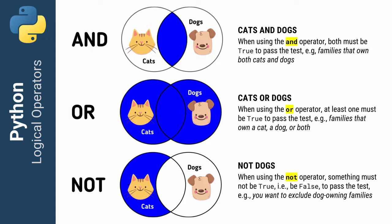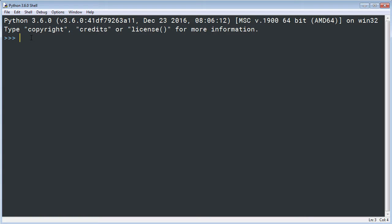The AND logical operator requires that both of the things being tested are true. The OR logical operator requires that only one of the things being tested is true. The NOT logical operator is used when you're looking for whether something is false — commonly used to exclude things, for example finding any family that does not own a dog. Let's explore this concept further by writing a couple programs.